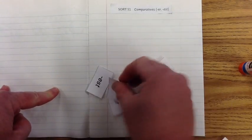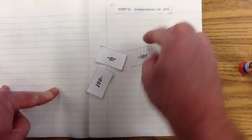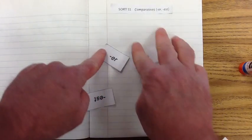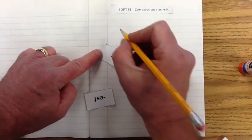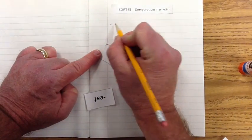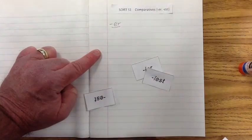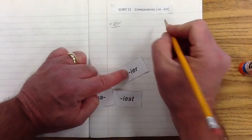All right. Next, let's go ahead and write in our exemplars. So at the top, let's go ahead and write in ER and then IER.